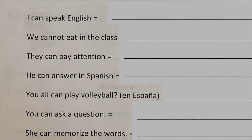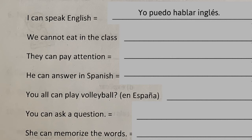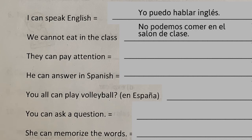Let's do these together. 'I can speak English' — that would be: yo puedo hablar inglés. 'We cannot eat in the class' — nosotros no podemos, that's fine. You could simply say: no podemos comer en la clase.